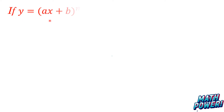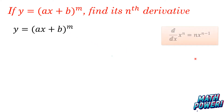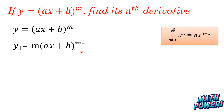If y is equal to (ax + b)^m, find its nth derivative. We already know that d/dx of x^n is equal to n times x^(n-1). When we apply this to y, we will get m times (ax + b)^(m-1) times a.